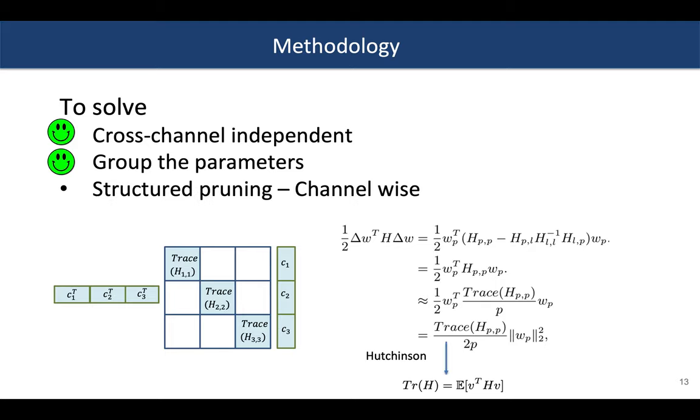To summarize, the cross-channel independency does us a favor to get rid of the Hessian inverse, and we use trace to approximate the quadratic formulation.